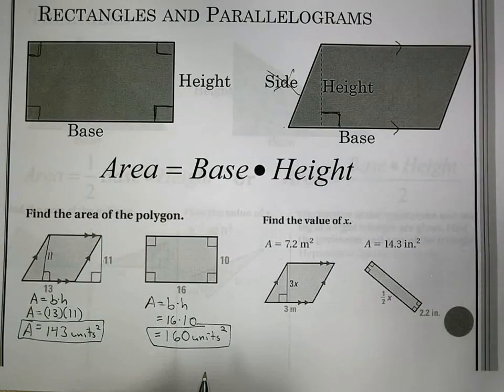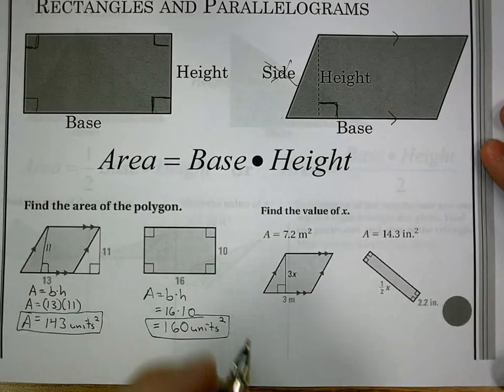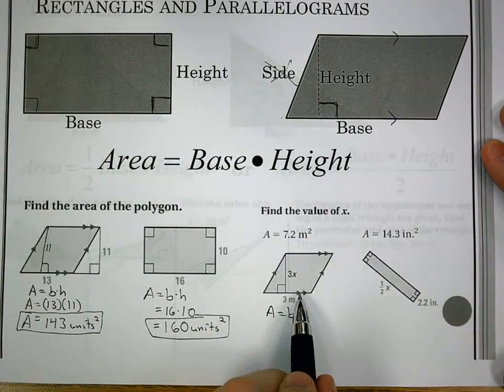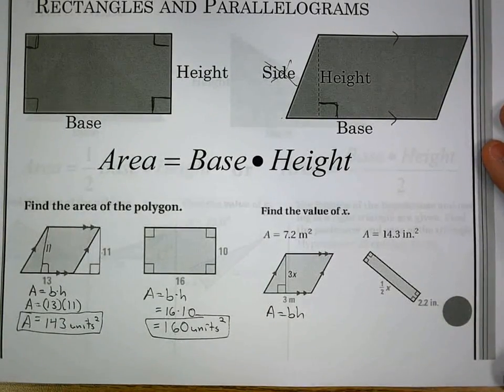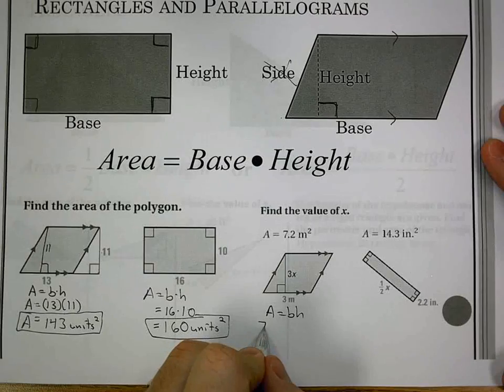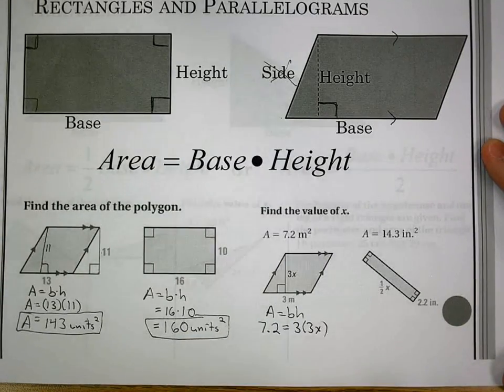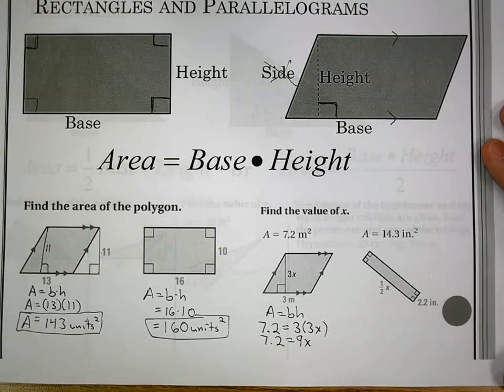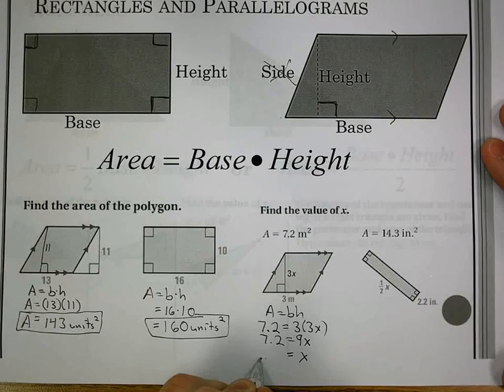Next problem, my next two problems have kind of added a little bit to it. Now they give me the area, and I need to solve for an unknown value. I still have to write my formula as I start. Area equals base times height, because it's a parallelogram. Almost get into the habit of just identify what shape it is. Don't worry about the values yet. What shape is it? What formula am I going to use? Then figure out what you need from it. So base times height is what I'm going to use. I have 7.2 equals 3 times 3x. And I'm solving for x. I get 7.2 equals 9x. If I divide 7.2 by 9, I get 0.8.